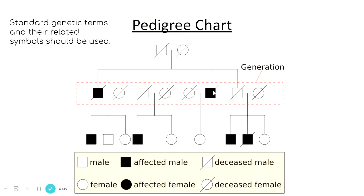When looking at a pedigree chart, it always tracks one particular condition. The black shaded boxes indicate that the person has that condition, whereas open shapes mean the person is unaffected. Diagonal lines mean that person has died. The marriage line shows that a male and female have reproduced together, and the line of descent shows their children. For example, they've had three boys and one daughter, who in turn have had two boys and a girl. So we have first, second, and third generations.